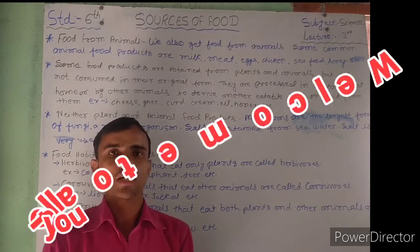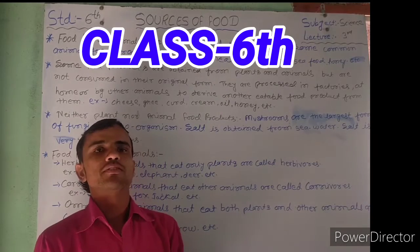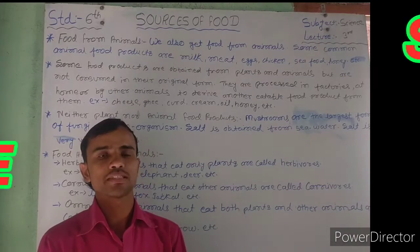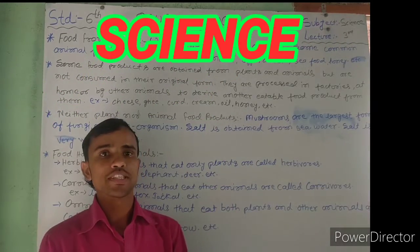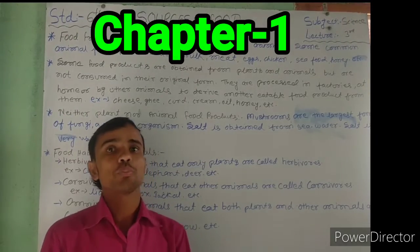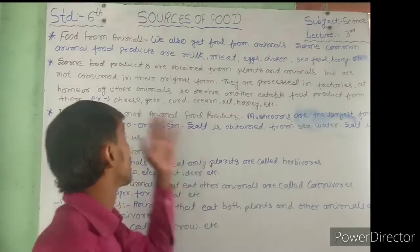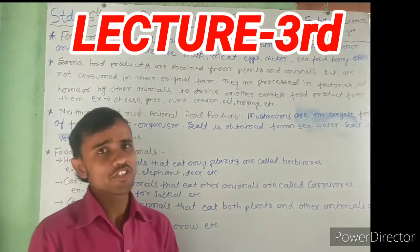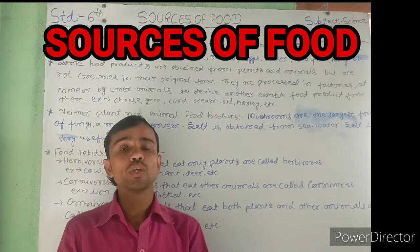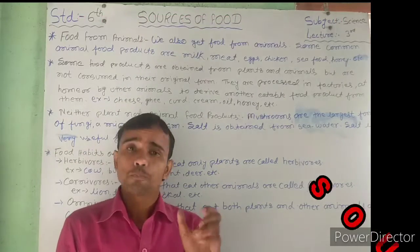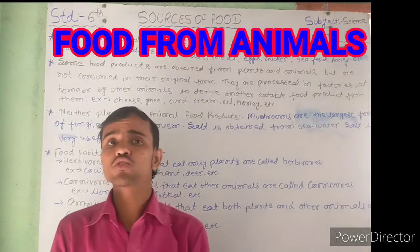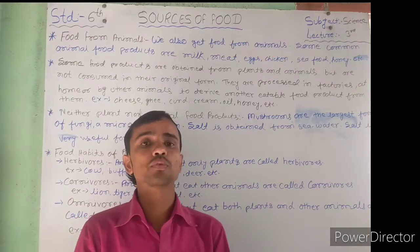Welcome to the online YouTube class. Today we are discussing the next topic in science for class 6. The chapter name is Sources of Food. Before this class we discussed some topics, and today's topic is Food from Animals. Yesterday we discussed Food from Plants, but today we are focusing on Food from Animals.